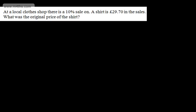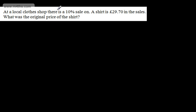So in the first question now, it says, at a local clothes shop, there is a 10% sale on. A shirt is £29.70 in the sales. We're asked to find the original price of the shirt. A common error is to find 10% of this value and add it on. The way I like to set this up is to consider my multipliers. A 10% reduction is going to have a multiplier of 0.9, or 0.90. We could write this as 90 over 100, or 9 over 10.